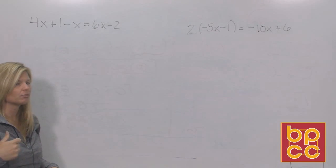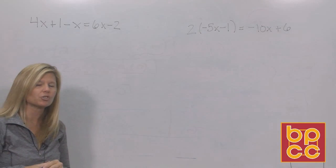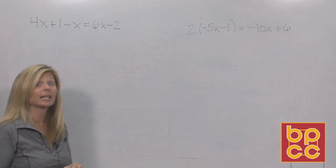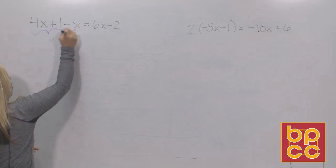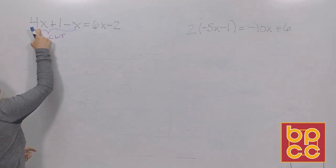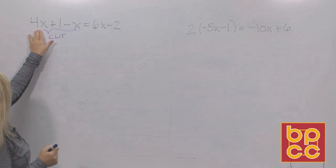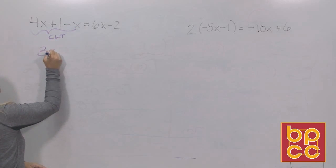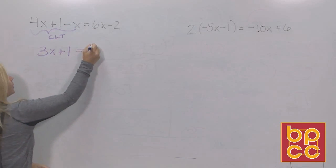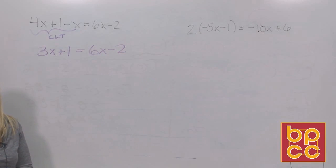Step one: do we have any parentheses? No. Step two: do we have any fractions or decimals? No. Step three: can we collect like terms? Sure we can. On the left side, we can put 4x and minus x together — 4x minus 1x is 3x. Bring down the plus one. Step four: we move the variables to the left side.